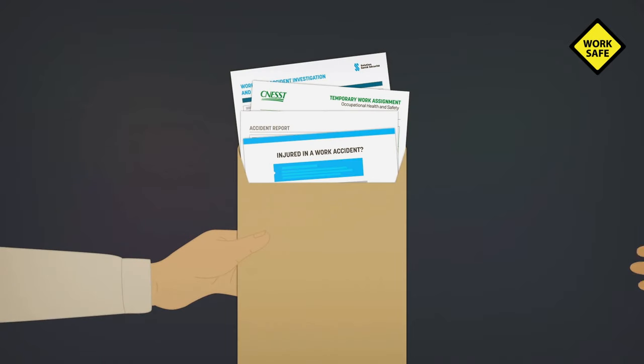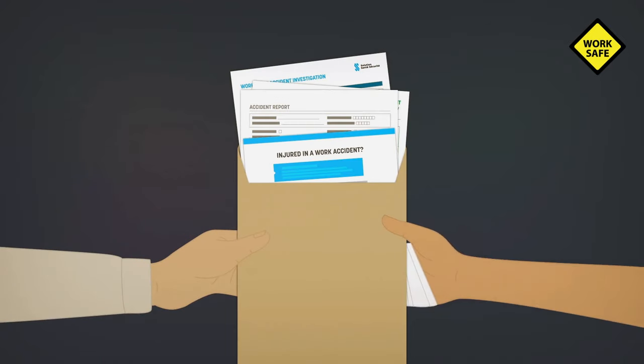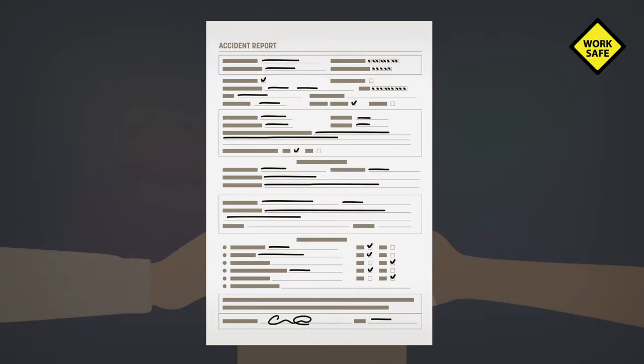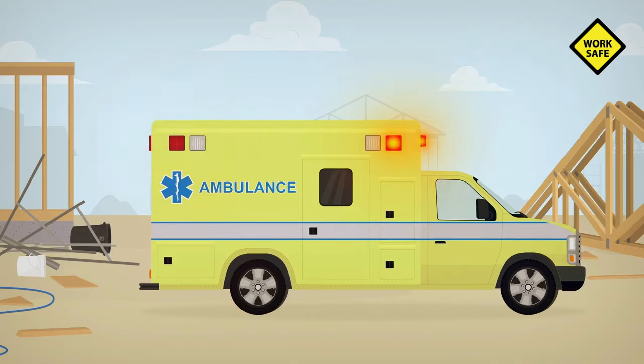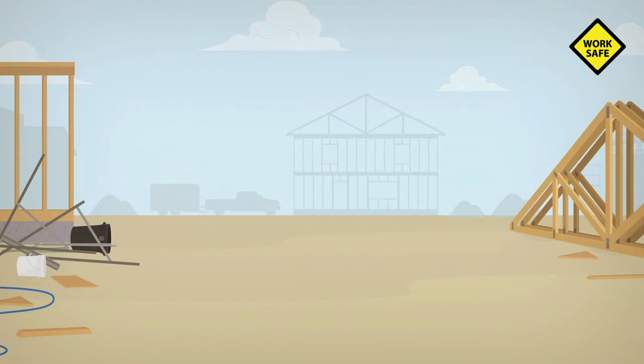Hand a copy of the worker's toolkit to the injured worker and make sure they fill out the accident report. If they are unable to fill it out right away, make sure it is done as soon as possible.